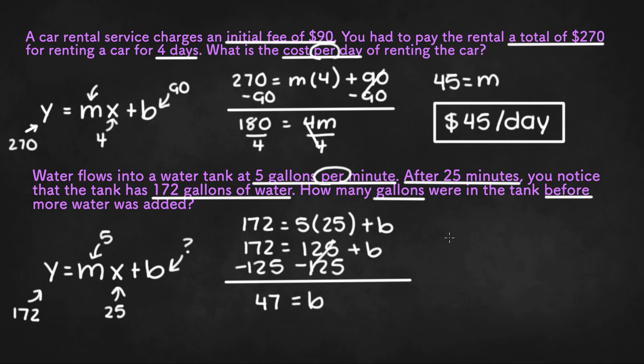So we had 47 gallons of water before we started adding 5 gallons per minute. So 47 gallons of water is our final answer.